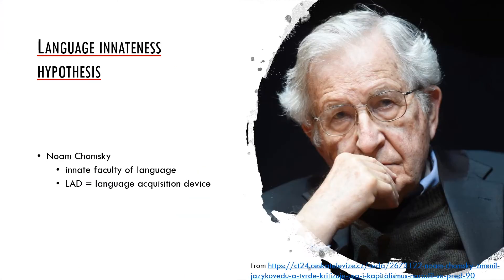Since the 1950s, the major proponent of the idea of language innateness has been Noam Chomsky. In his numerous works he argued that children are born with the so-called faculty of language, meaning there is a specific language module in the brain responsible for our ability to learn a language. One well-known theoretical consequence is the universal grammar hypothesis, which suggests that all languages share a common underlying grammar whose features stem from the nature of the language faculty.